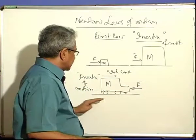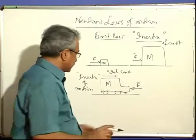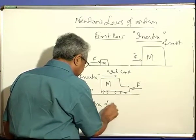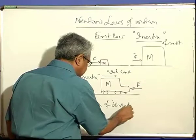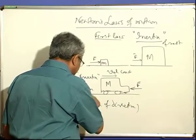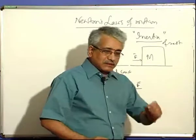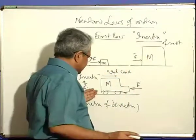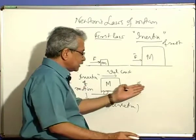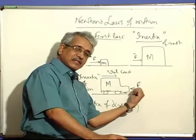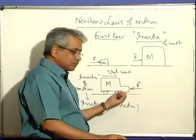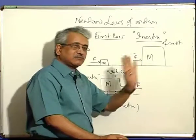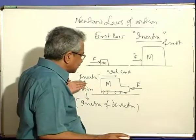Inertia is inability to change its state all by itself — here from rest to motion, there from motion to rest. By nature it is the same; by quantity it is the same because both are proportional to mass. There is also inertia of direction. When a body is moving in a direction, it will try to continue in that direction only. Even if you apply a force in the opposite direction, before it stops, it will continue in that direction with reducing velocity, because it has the tendency of continuing in the same direction.